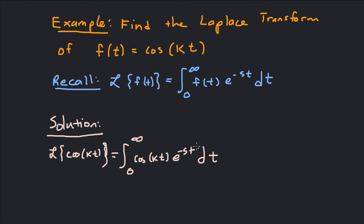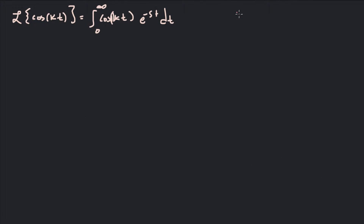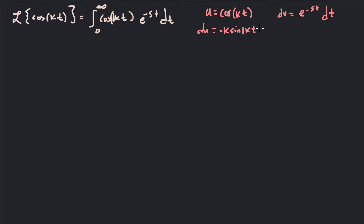To integrate this function we know it's going to be done by parts — actually we have to do it by parts twice. For our integration by parts I'm going to pick u equals cosine kt, because I like to differentiate cosine more than I like to integrate cosine. And dv is going to be e to the negative st dt. Differentiating u gives du equals negative k sine kt, and integrating to get v gives negative 1 over s times e to the negative st.